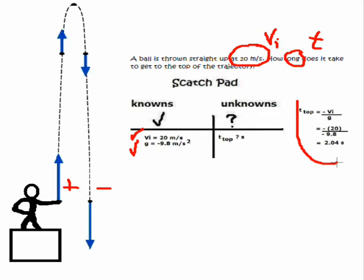And then here's our equation that we derived a few minutes ago. So we've got VI over G. We've got minus 20, or it's negative VI, and then negative 9.8. So in math, a negative divided by a negative is positive. And 20 divided by 9.8 gives you a time of 2.04 seconds to get to the top here.